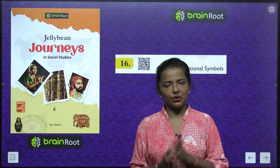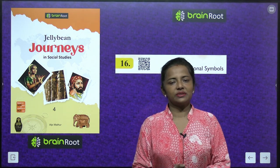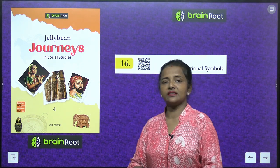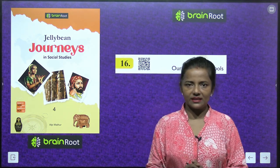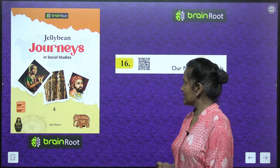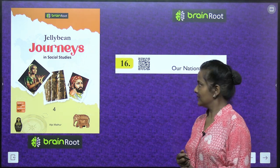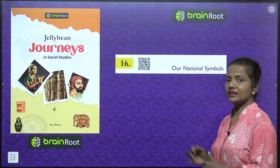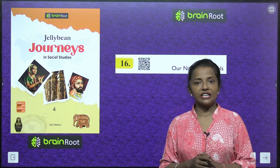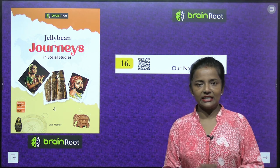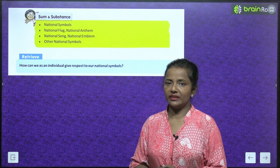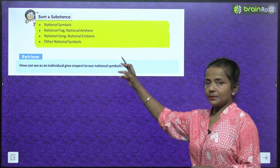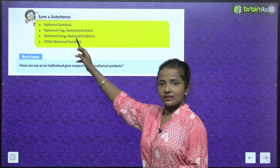Hello smart learners! We are ready to start a new chapter of your book Jelly Bean Journeys in Social Studies Class 4 by Brain Root series. Today we will start Chapter 16: Our National Symbols. We will learn about the different national symbols of India — what they are and what they represent.